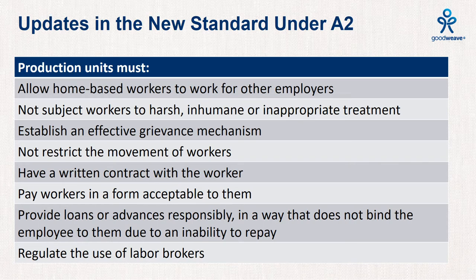Under A2, clarity has been added around home-based work to explain that workers are not bound to one employer. It is now a core requirement to ensure workers do not endure harsh, inhumane, or inappropriate treatment. The standard now requires that a grievance mechanism is available for anonymous complaints. It is also now a core requirement that producers cannot restrict the movement of workers during or outside of work — this includes allowing workers to take breaks, use the bathroom, and eat meals. Workers must have unobstructed access to exits in all facilities; for example, factory doors may not be locked to prevent workers from leaving.